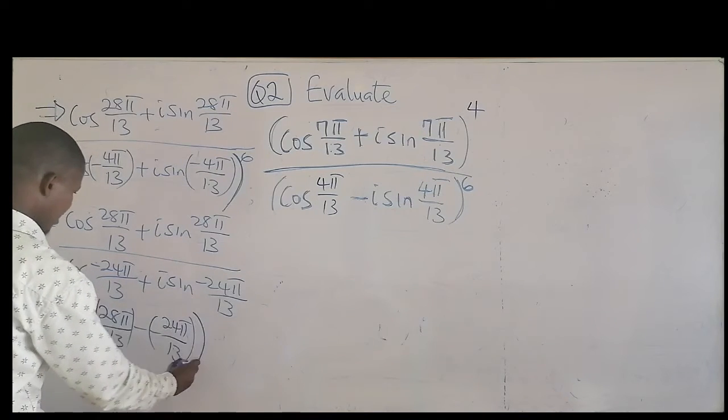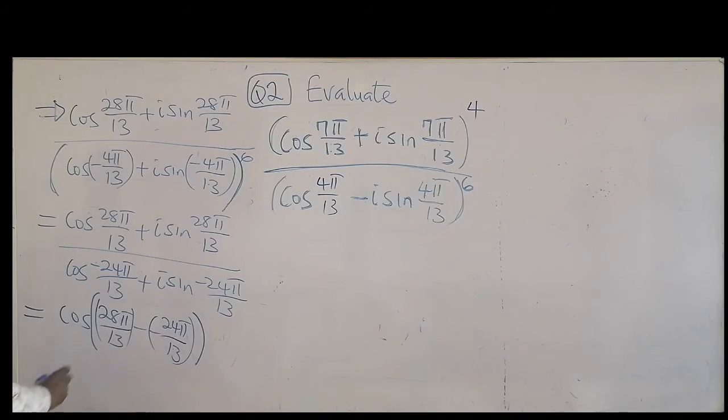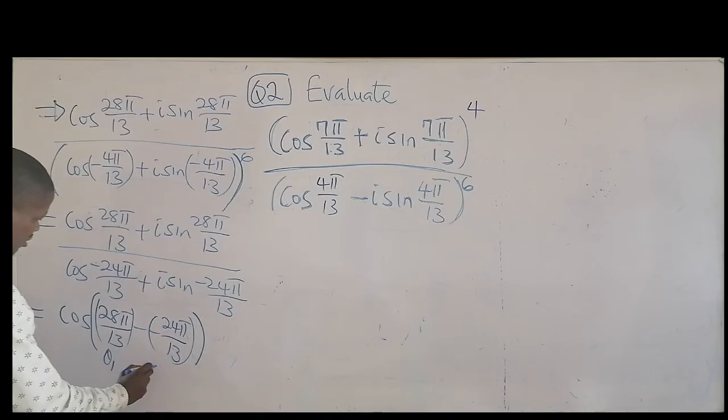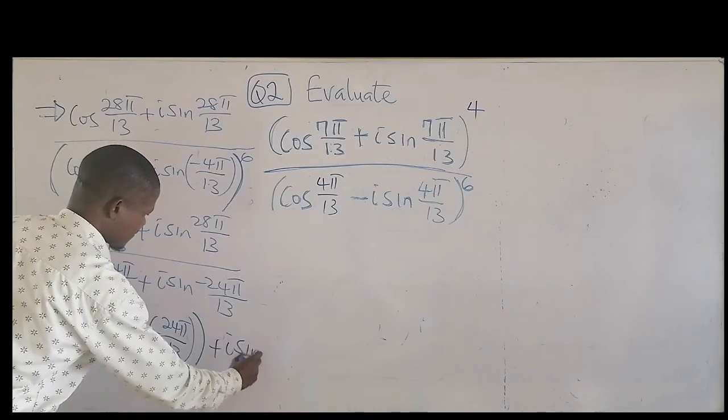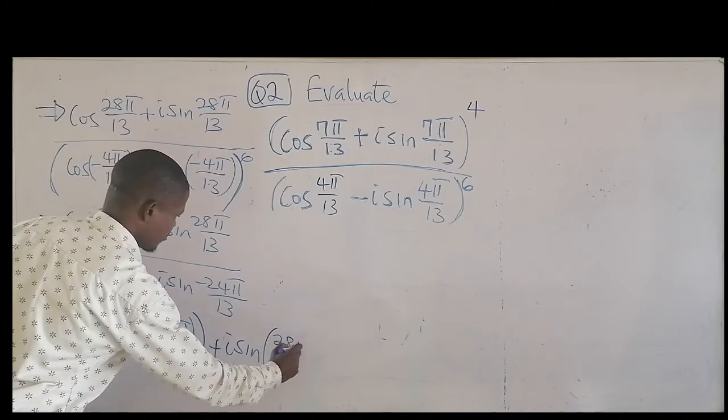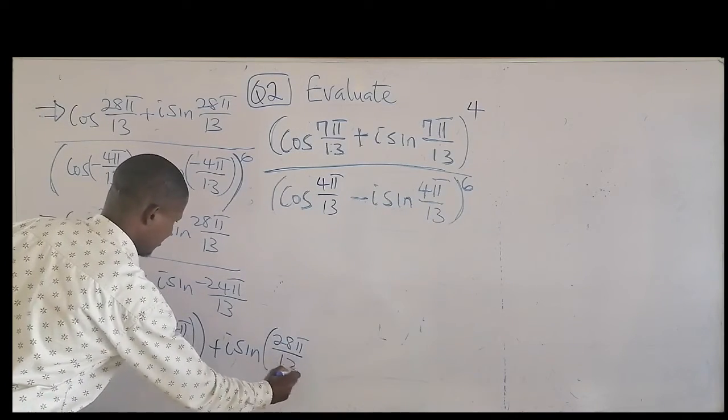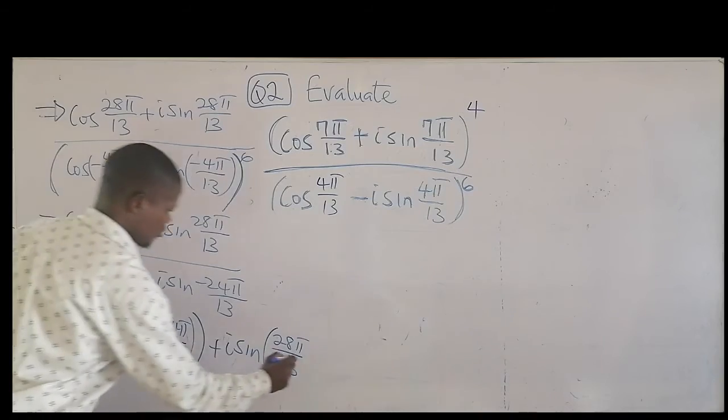Then, all enclosed inside here, theta 1 minus theta 2, and then plus i sine. Theta 1 is 28 pi over 13, minus minus is plus 24 pi over 13.